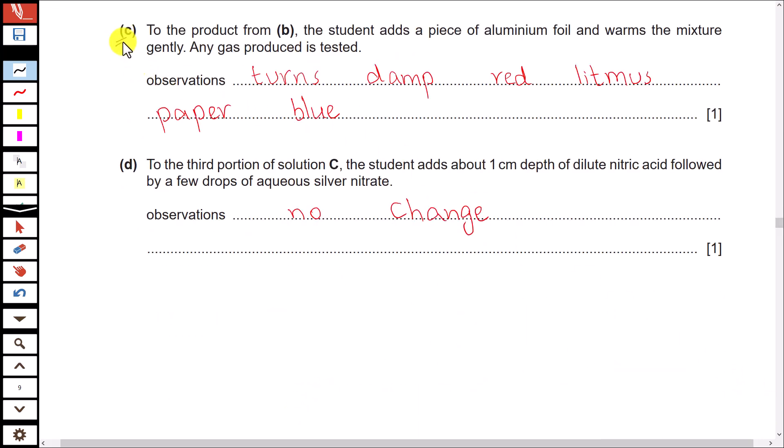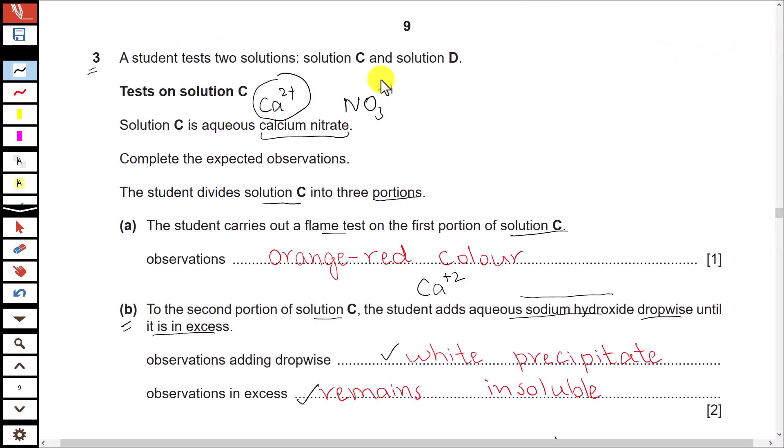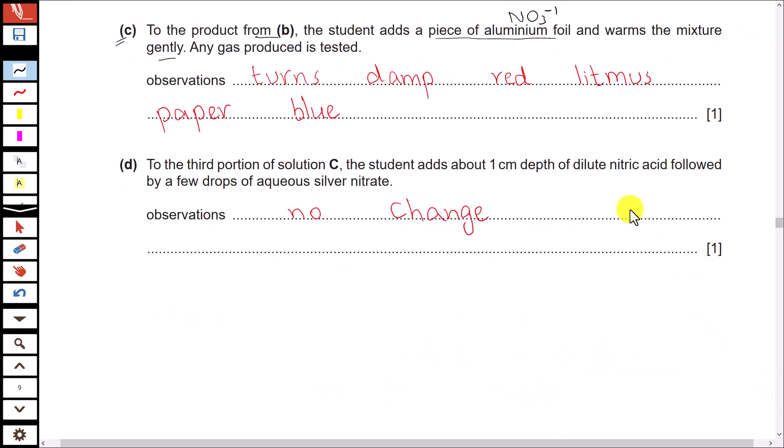Part C: to the product from B, the student adds a piece of aluminum foil and warms the mixture gently. This is a test for nitrate ion where aluminum foil is used and then we warm the mixture. Look at the solution—we have nitrate ion in this solution, so it will be a positive test for nitrate ion. And what happens in this test? Ammonia gas is produced. What should be the observation for the gas when it is tested?